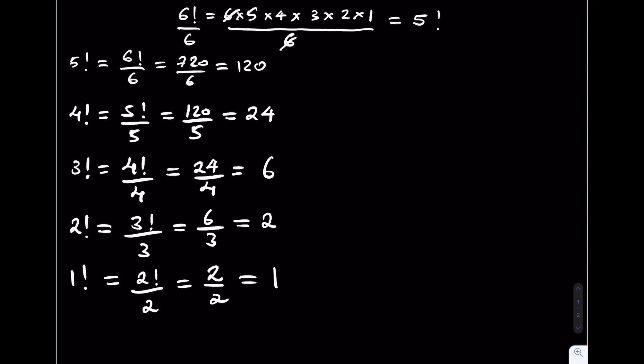Now we go on to the beauty. 0 factorial. This is given by 1 factorial over 1 which is equal to 1 over 1. And this is equal to 1. Hence, 0 factorial is equal to 1.